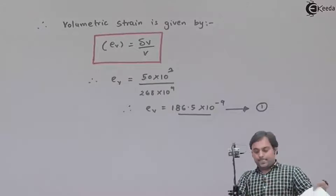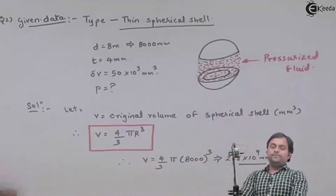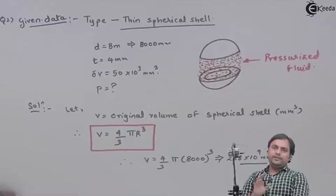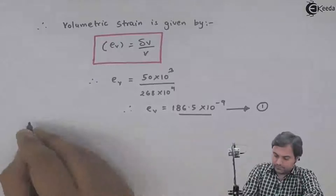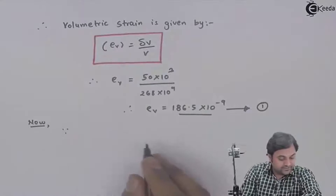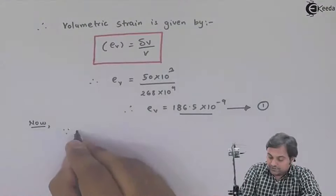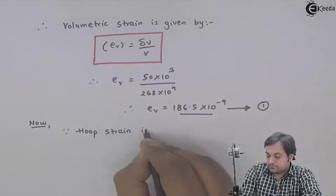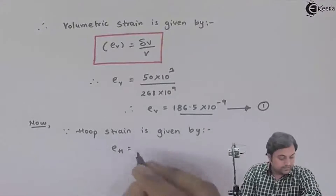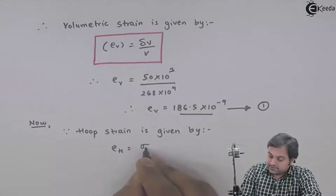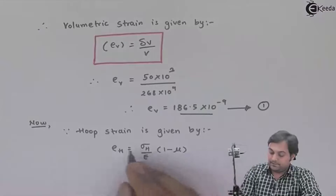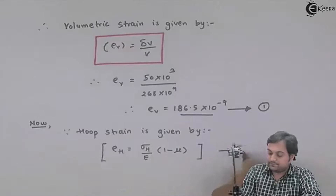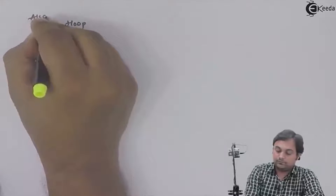The concept used here is that to find the internal pressure we use volumetric strain derived from circumferential strain, also called hoop strain. The circumferential strain formula is: hoop stress / Young's modulus × (1 − μ). This will be kept as equation number 2, while we first calculate hoop stress.